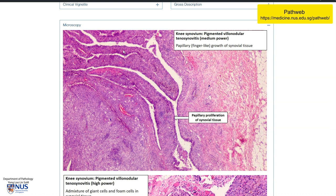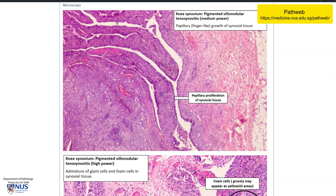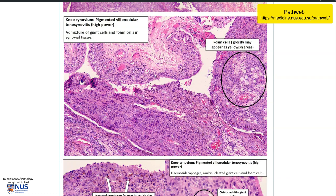This is a lower magnification view of one of the areas of these frond-like projections, and this is actually hyperplastic synovial lining. The underlying tissue has a variety of cells. Moving to a higher magnification, we can again see the hyperplastic synovial lining, and in the stroma there is a variety of cells. In this particular area we can see all these pale cells, which are foamy macrophages. Aggregates of these macrophages would give this lesion a yellowish appearance grossly.